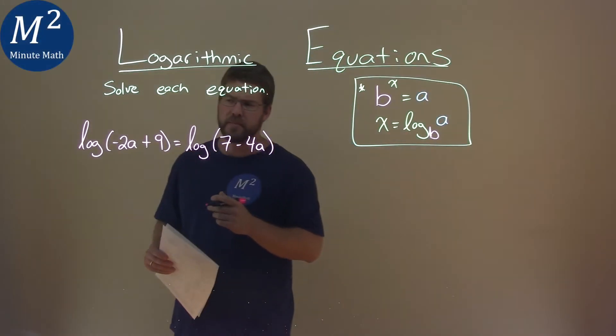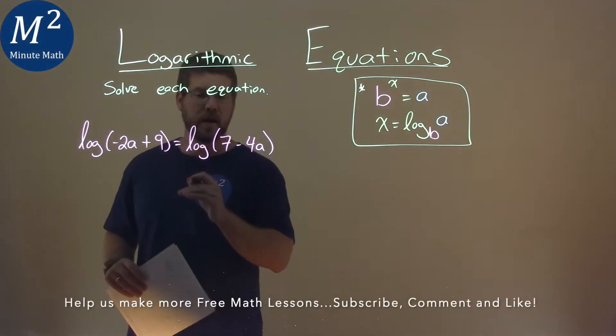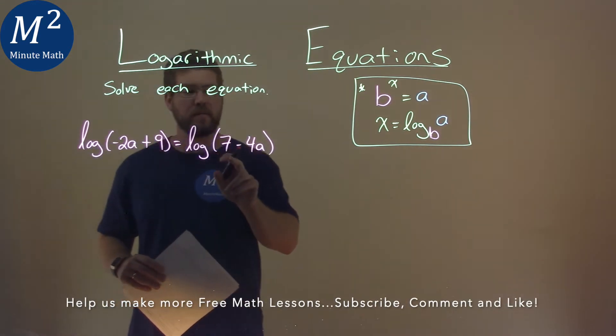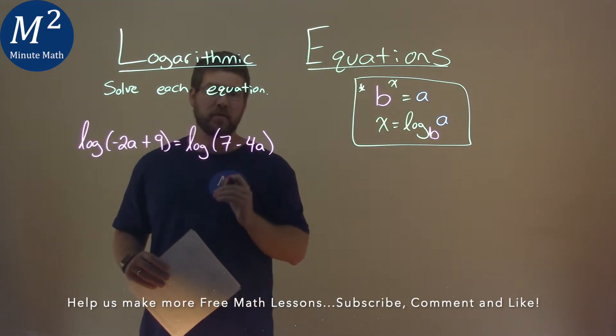We're given this problem right here. The log of negative 2a plus 9 is equal to the log of 7 minus 4a, and we have to solve this equation.